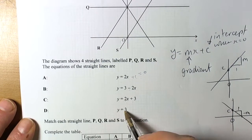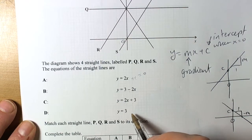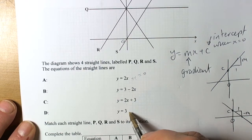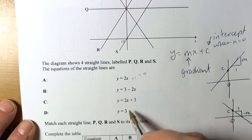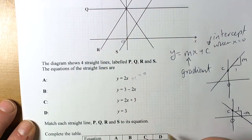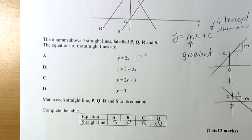And y equals 3 has no x, so it's got a gradient of 0. Gradients of 0 are horizontal lines, so it must be line Q.